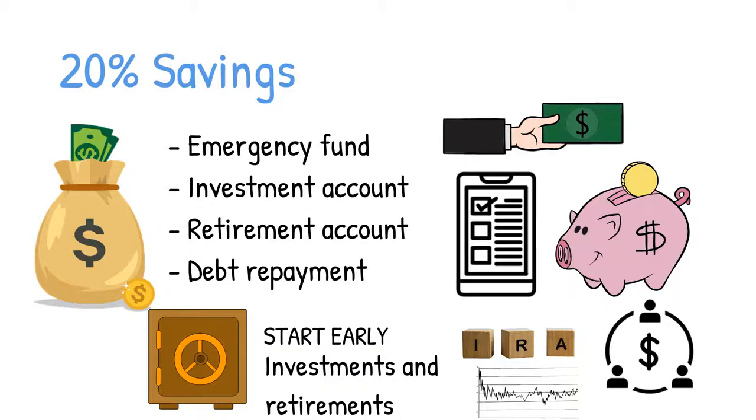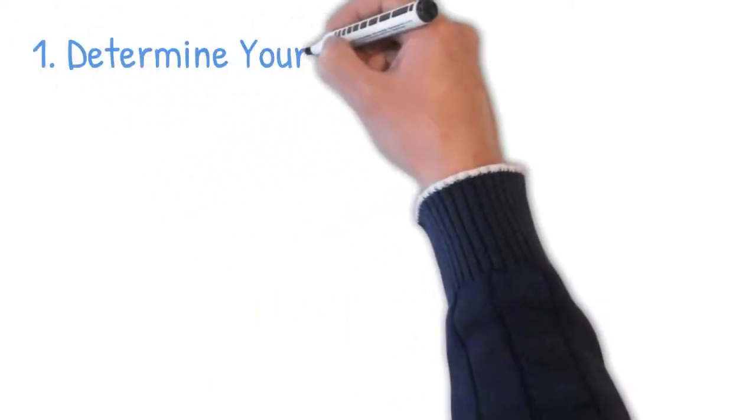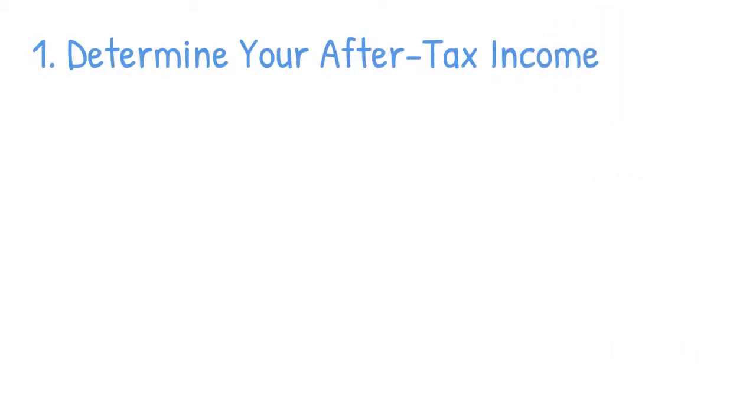How to budget your money using the 50-30-20 rule, four key steps. According to Senator Warren and her daughter, these steps are essential in managing your income using the 50-30-20 rule. Step 1: Determine your after-tax income.